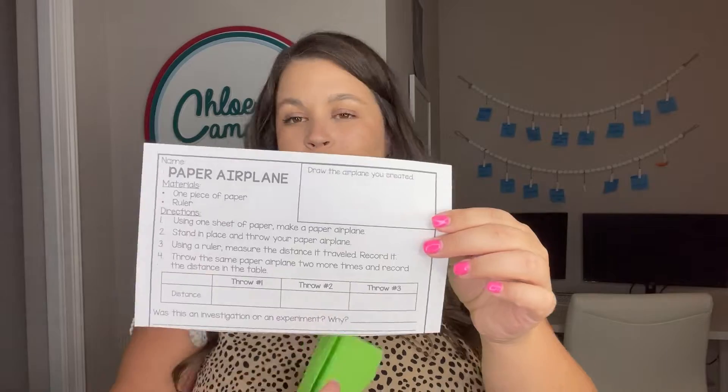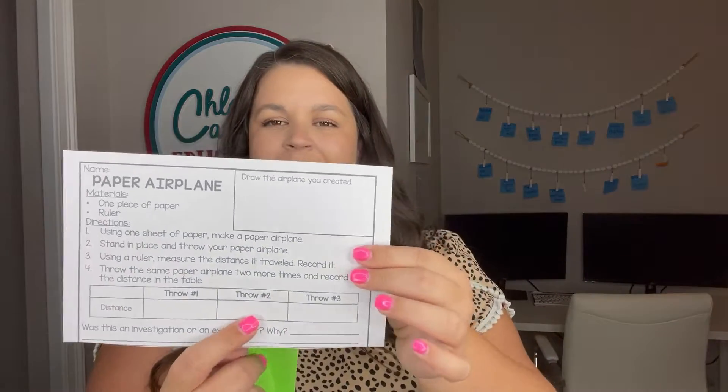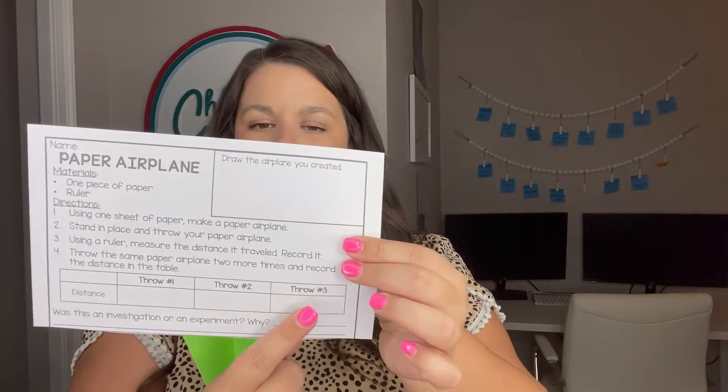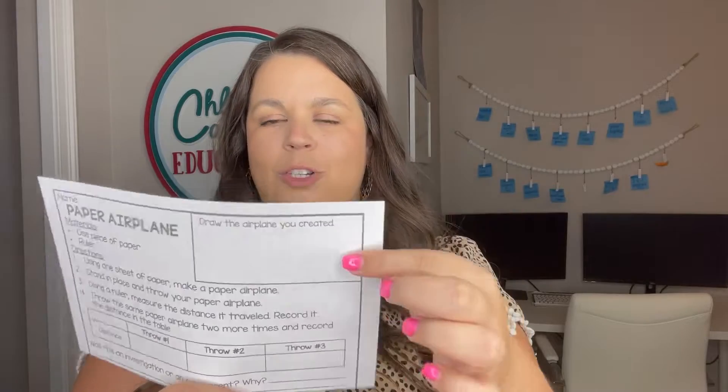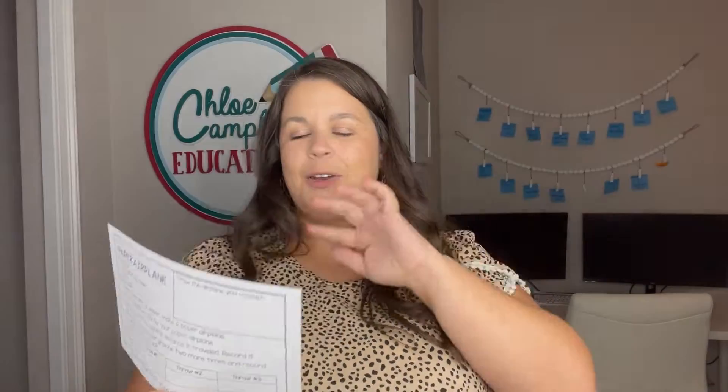Notice that I have three throws here, because I wanted the students to see that there are still trials in an investigation, and so we line back up. We throw it again for number two and we record that right here. We do that whole process over one more time for throw three. Now at the end I allow them to take a minute to draw their airplane. Normally that takes most of my first day of investigations.